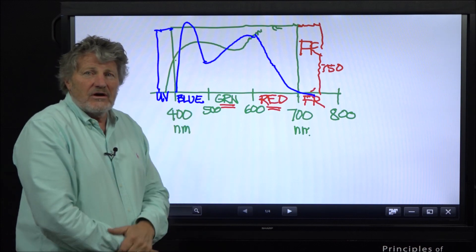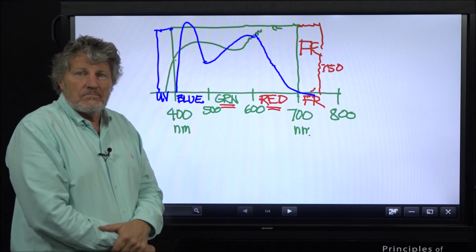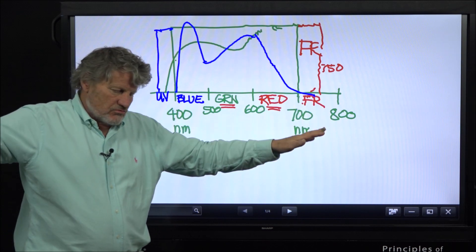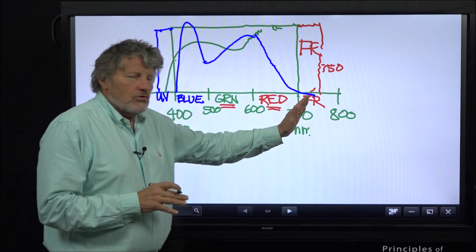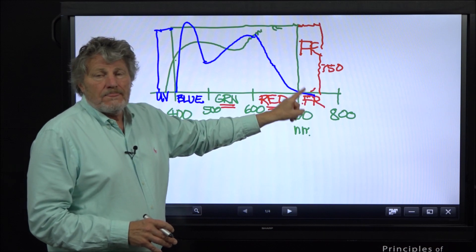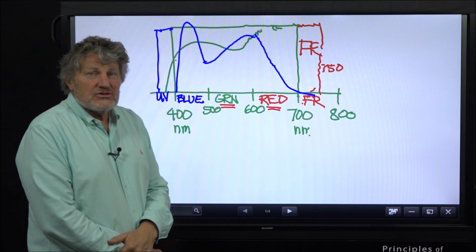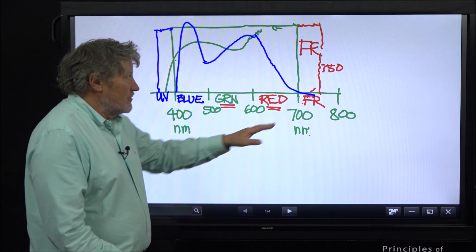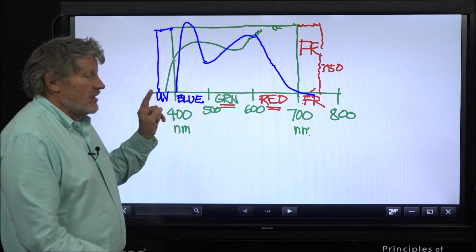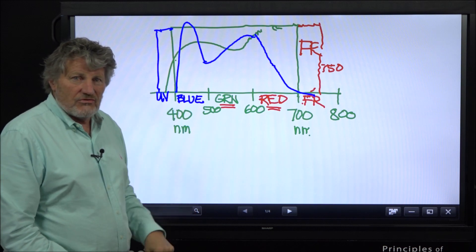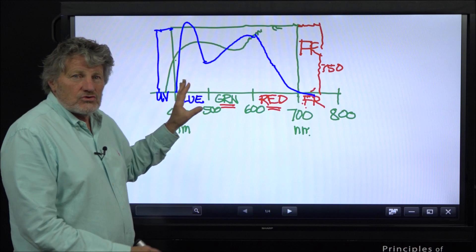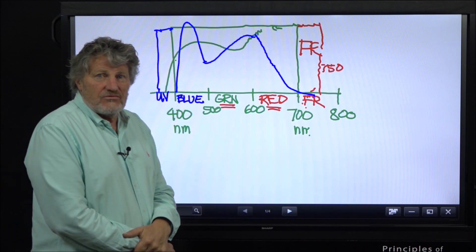Lettuce is in a unique category — it responds very well to far red, which expands the leaves and causes rapid growth. But if you give far red photons to tomatoes, they mostly just get taller, which is bad. Most crops respond to far red by getting tall. However, lettuce, spinach, and leafy greens respond to far red by growing more leaves, which is a good thing. We can use far red to counteract blue for crops like lettuce. As for cannabis — far red makes it taller, blue makes it shorter, so cannabis is more like tomatoes. We have to be careful not to give too much far red to cannabis.